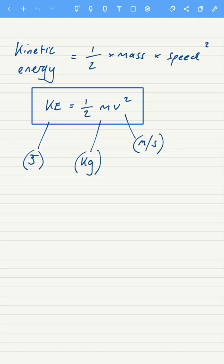So the shorthand version: KE, kinetic energy equals a half mv squared. I'm sure you've used that before. Kinetic energy is measured in joules, mass is measured in kilograms, and speed is measured in meters per second.